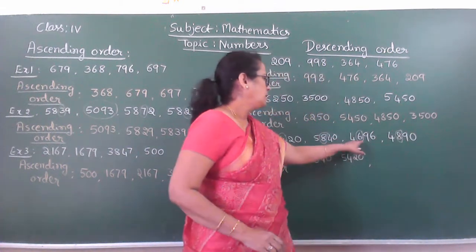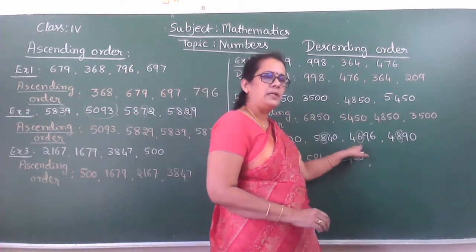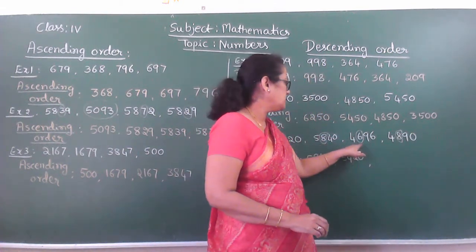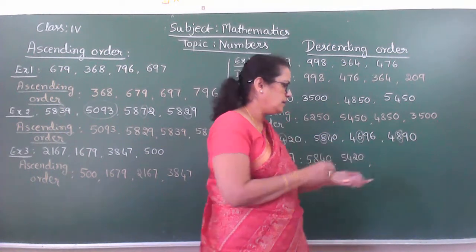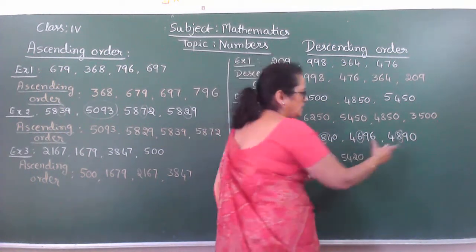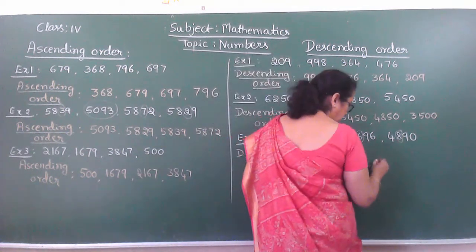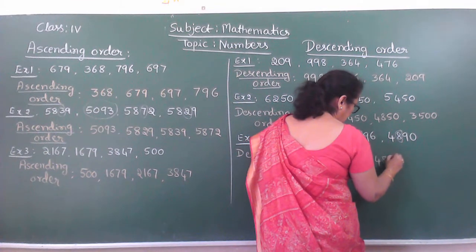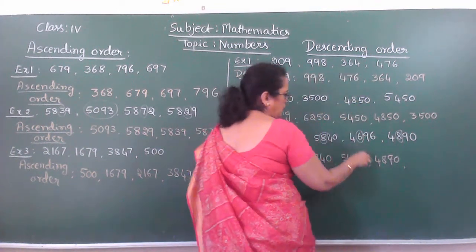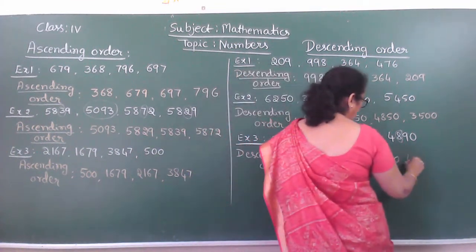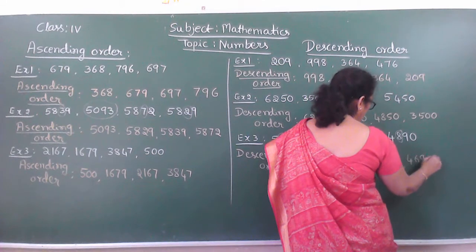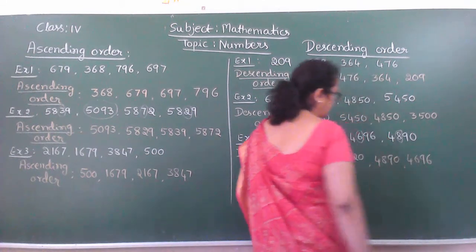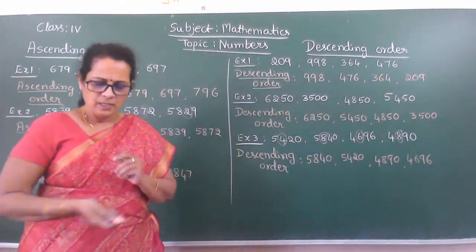See, which is the bigger one in the hundreds place — 6 or 8? 8 is bigger. So 5,840 comes first, then 5,420. For the numbers with 4 in the thousands place, write 4,890 and the last one is 4,696.